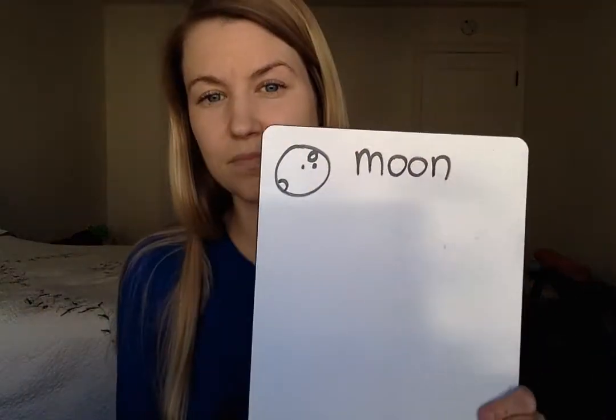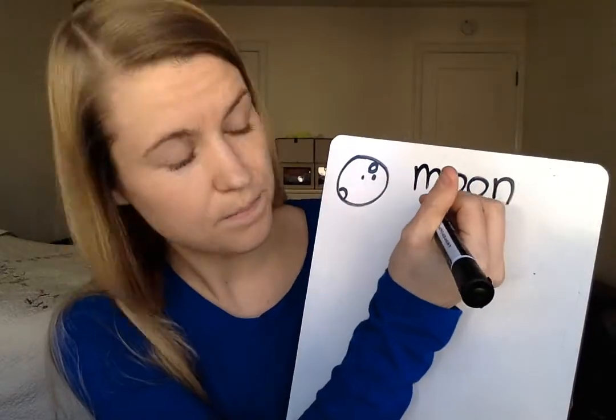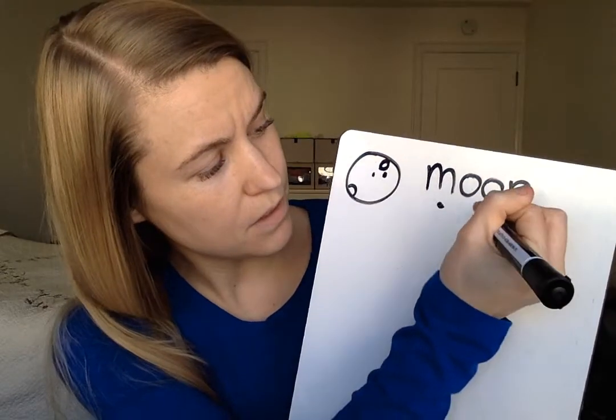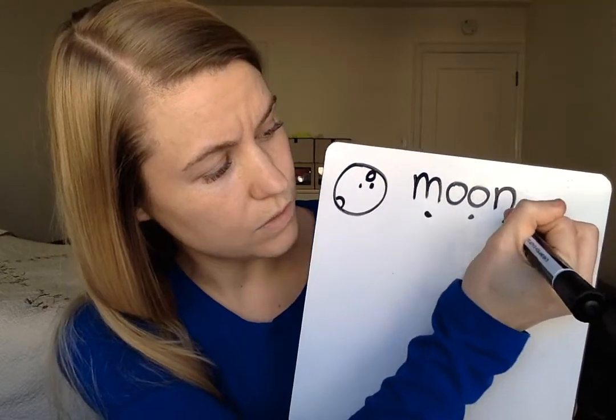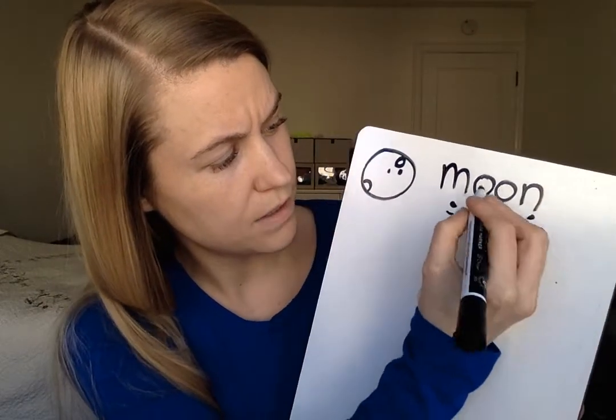Now this week, the phonics rule is actually about words with the double-O making oo — like in the word 'moon.' So in our word 'moon,' we've got M, oo, N — moon.